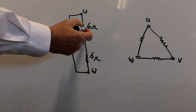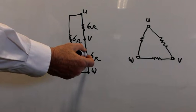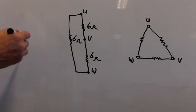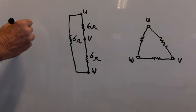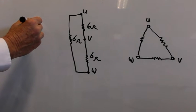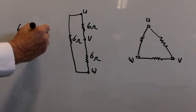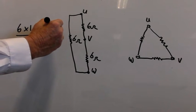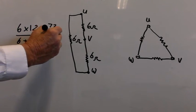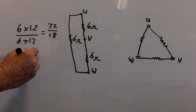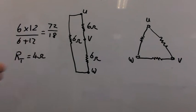Now we can use the product over sum method in conjunction with the series resistance values here. So we have 6 ohms and 6 ohms here which is 12 ohms and then we have 12 ohms in parallel with another 6 ohms. So this would give us using the product over sum 6 times 12 divided by 6 plus 12. This equals 72 over 18. So therefore the total resistance RT would equal 4 ohms.